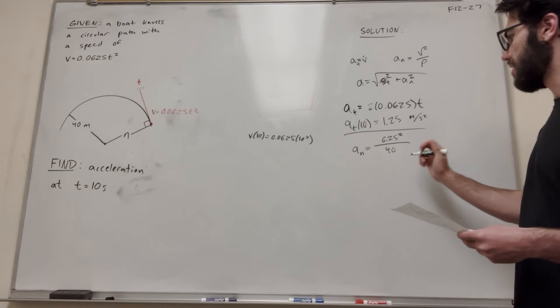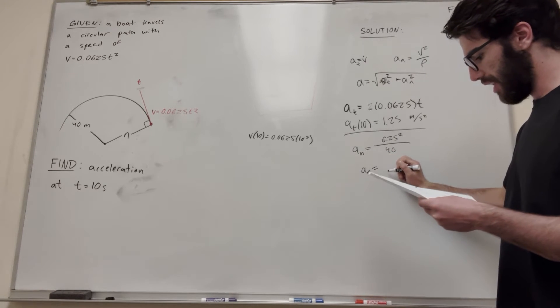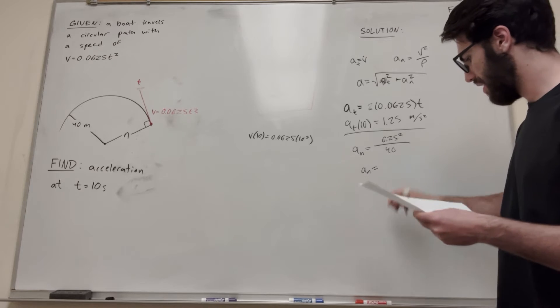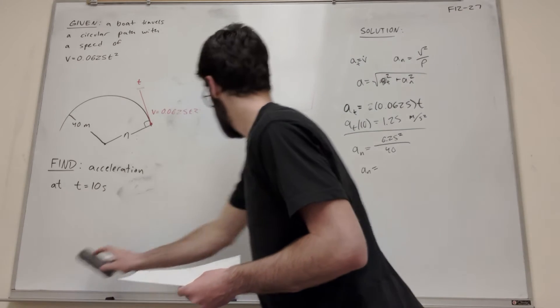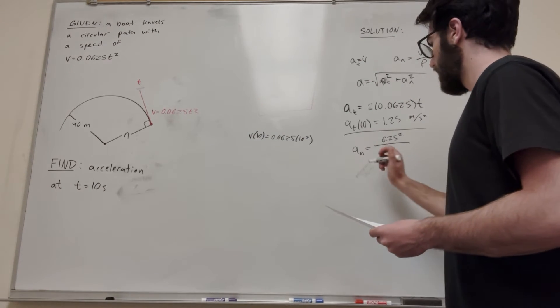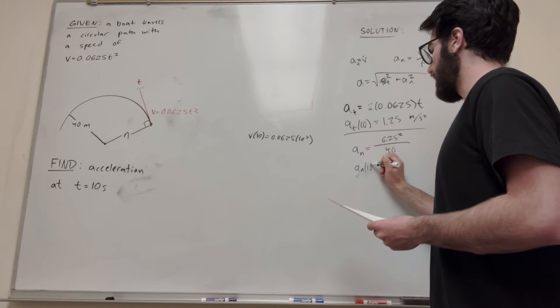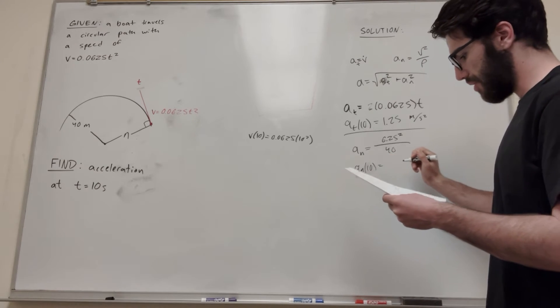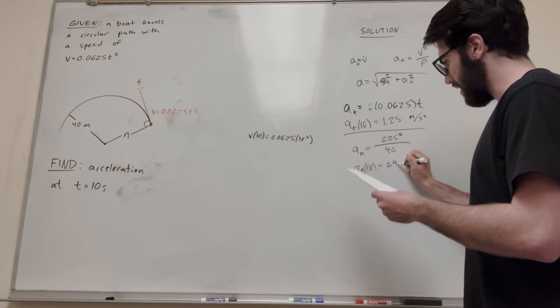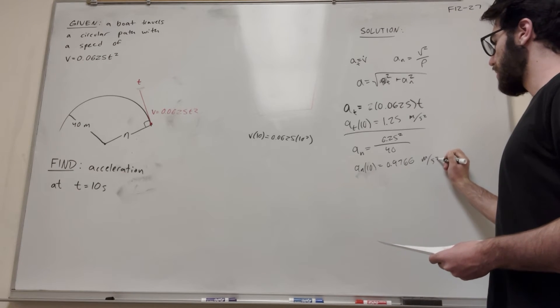Let's go ahead and solve this. I'm just going to plug that into your calculator. You're going to find that this is also at 10, so we can say acceleration normal at 10 is equal to 0.9766 meters per second squared.